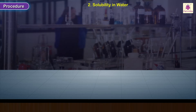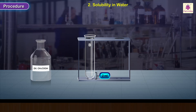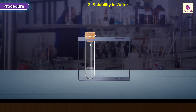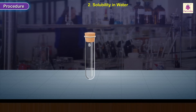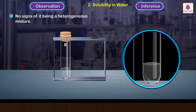Procedure 2 – Solubility in water: Take another clean test tube and label it B. Take about 2 ml of ethanoic acid in it, then add 3 ml of distilled water. Observe whether two separate layers form. Close the mouth with a rubber stopper and agitate the contents to mix them well, then observe. Observation and inference: the mixture is homogeneous, showing no heterogeneous nature.